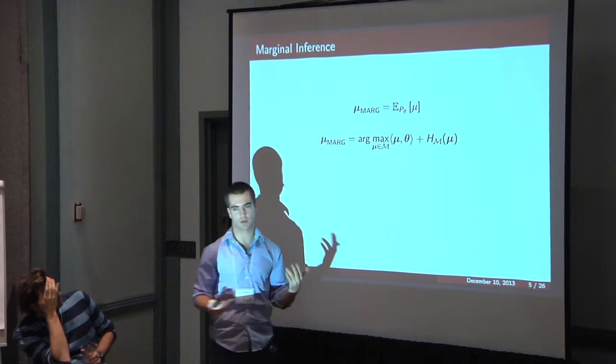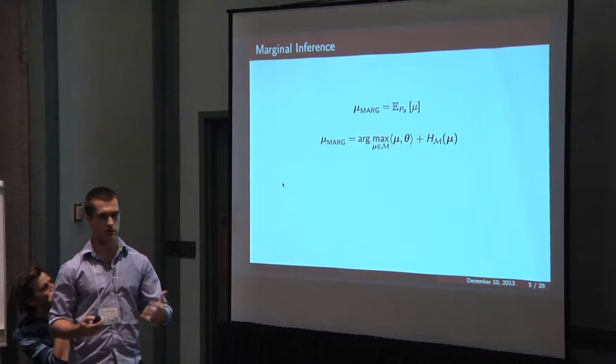It can be shown that this is basically the solution to this optimization problem. And this is the marginal polytope which is a sort of exponentially complicated set of consistent distributions or consistent mu vectors.